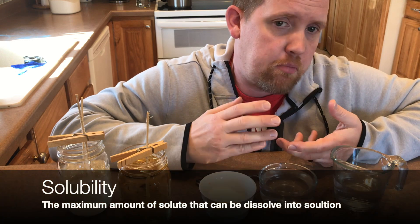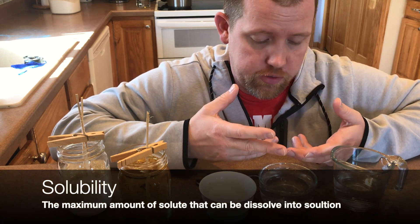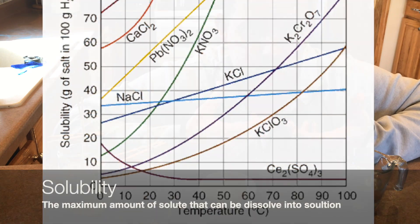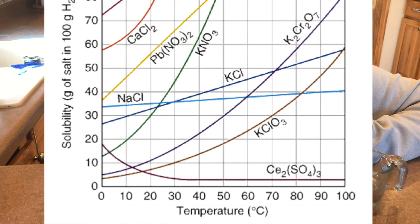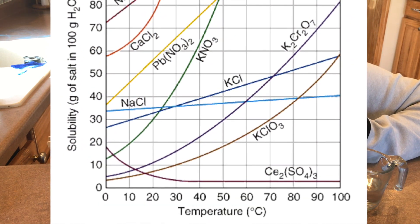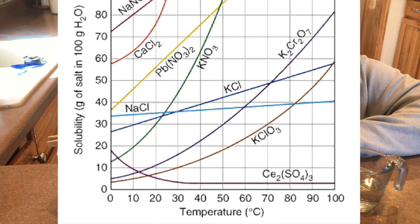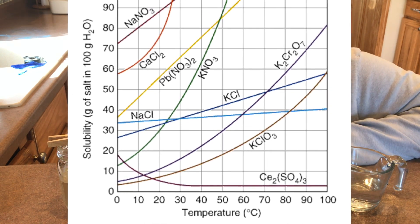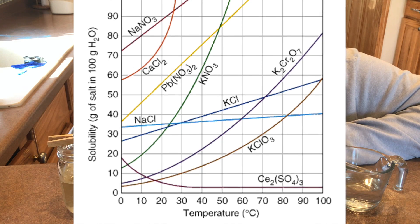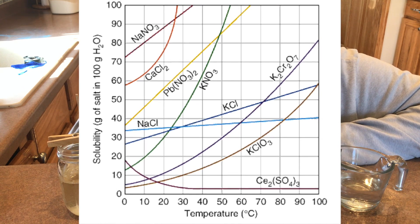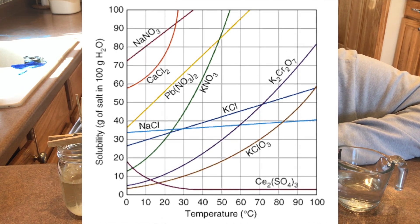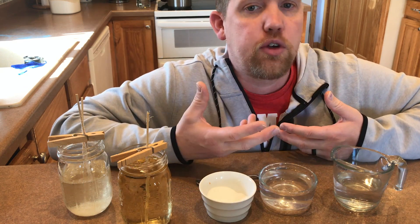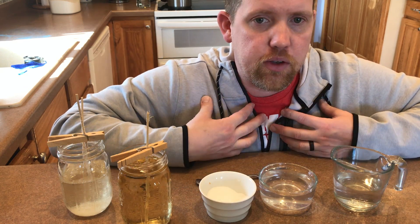Scientists call this maximum amount of stuff that can dissolve into a solvent 'solubility.' Here's a graph that shows how different types of solutes can dissolve in water. The lines are curving, so we often refer to this as a solubility curve. You'll notice that for most substances, as the temperature increases, it can hold more solute. In short, the higher the temperature, the more solute can dissolve — that is, the higher the solubility.